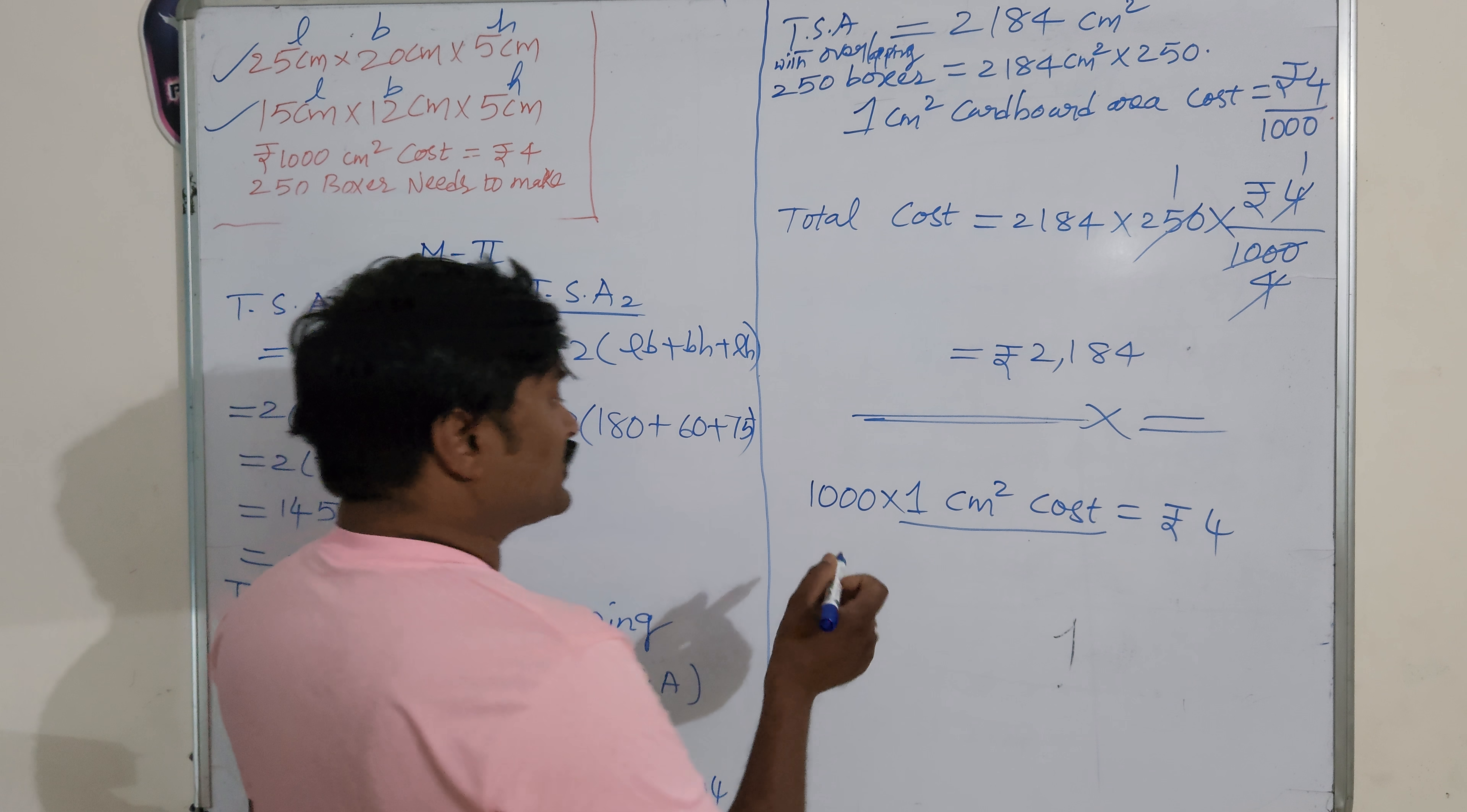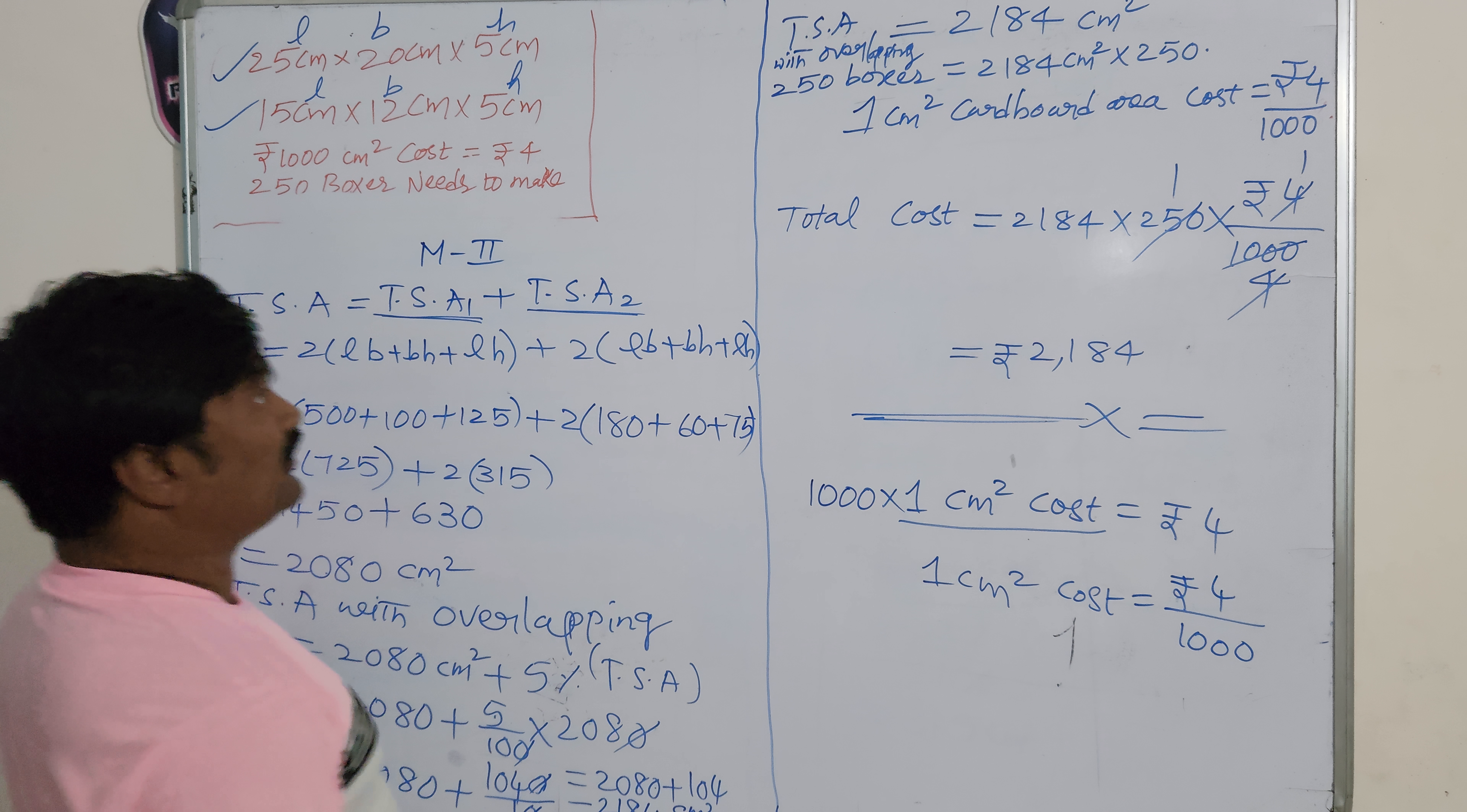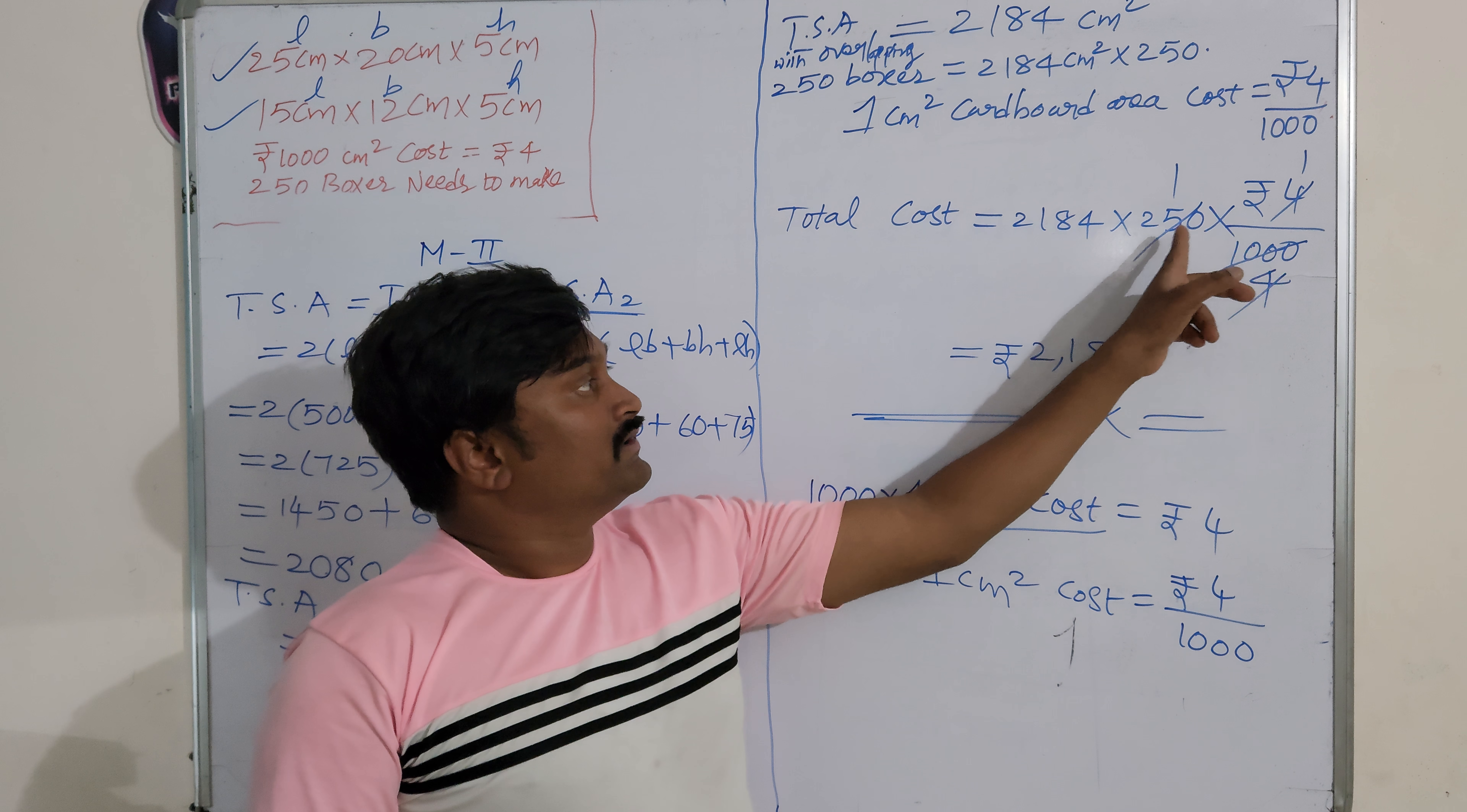Right here, thousand is multiplying. If it goes to that side, it divides. So now, one centimeter square cost is equal to rupee four upon thousand. In this way, we got that one centimeter square cardboard area cost is rupees four upon thousand. Okay, so then total cost - you found this total area multiplied with four upon thousand.